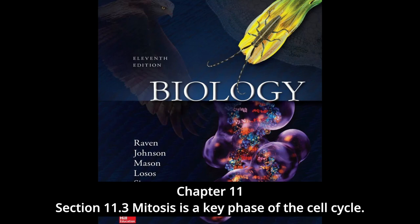Cytokinesis in animal cells: in animal cells and the cells of all other eukaryotes that lack cell walls, cytokinesis is achieved by means of a constricting belt of actin filaments. As these filaments slide past one another, the diameter of the belt decreases, pinching the cell and creating a cleavage furrow around the cell's circumference. As constriction proceeds, the furrow deepens until it eventually slices all the way into the center of the cell, at which point the cell is divided in two.